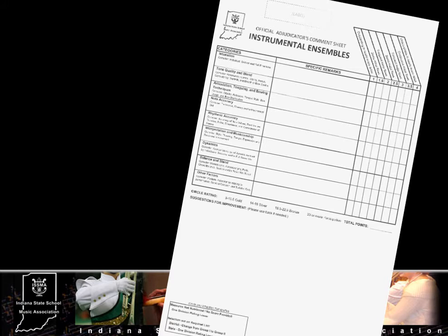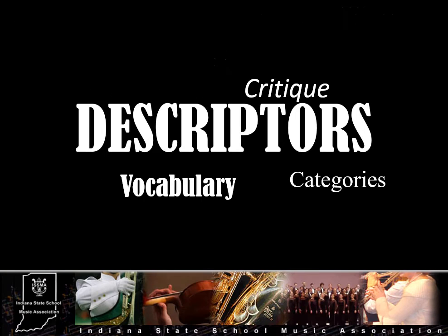In addition to your recorded comments and specific notations in the center column, written suggestions for improvement and acknowledgment of successes should be notated at the bottom of the sheet after the performance has finished, especially for categories where a point deduction has occurred. Comments may also be written on the back of the sheet if more space is needed and time allows. Now let's take a look at each of the nine assessment categories, their descriptors, and items for you to consider as you formulate an evaluation in each category.